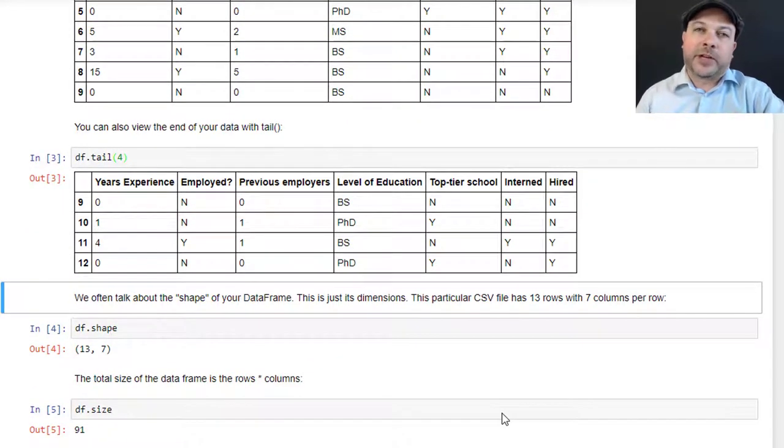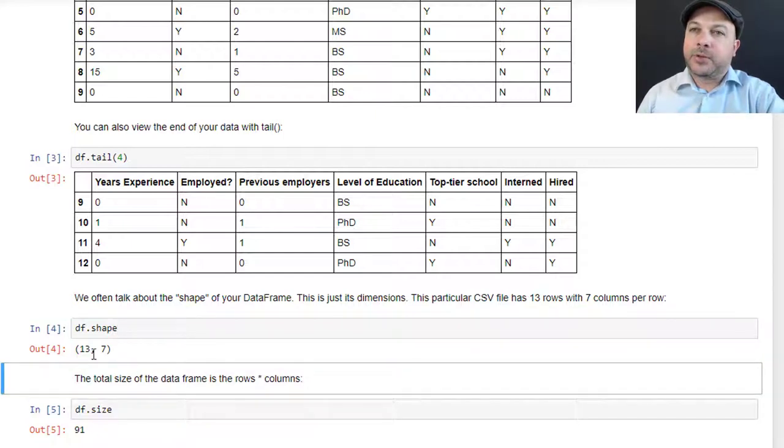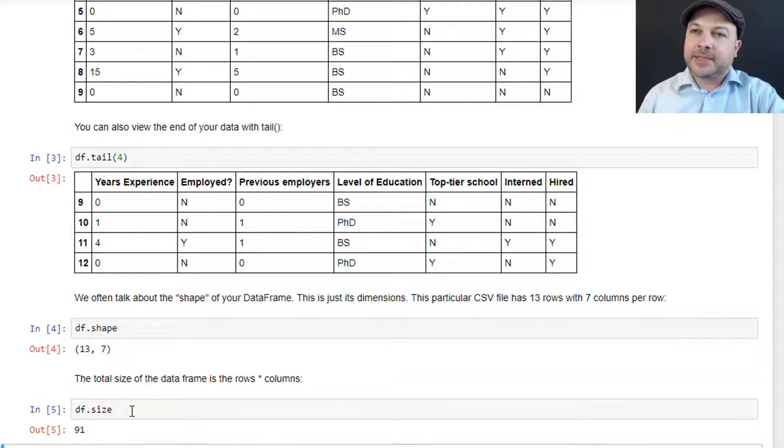Now sometimes we'll talk about the shape of your data frame. What we mean by shape is just the dimensionality of it. If we say df.shape, that will come back with 13 comma 7, which means we have 13 rows and 7 columns in our data frame. That's the shape of our data frame, just how many columns it has, how many rows it has. We can also say df.size and that comes back as 91, which is just the number of cells in our data frame, basically the number of unique data points, which is 13 times 7 in our example.